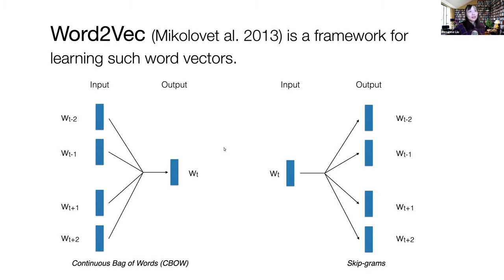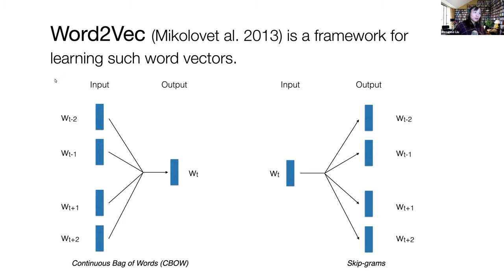Why are we predicting words if we're trying to build word vectors? Because if you want to learn a representation, you have to give the model a task. Machine learning needs an objective function and a loss function so it can use gradients to learn things. So you come up with a smart task such that by learning the task, the model automatically learns a representation that makes sense. Word2Vec uses either predicting a center word from neighbors or predicting neighbors from a center word.